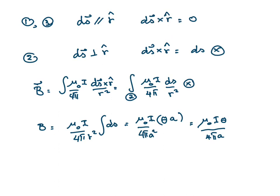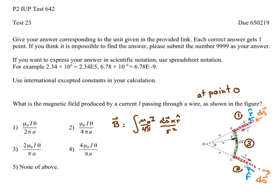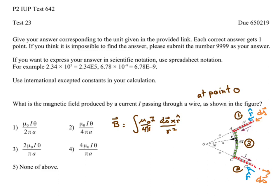So in parts one and two of the wire, ds cross r-hat is zero. This means the integral from the Biot-Savart law along these parts will be zero. We don't have to calculate the magnetic field contribution from the current in parts one and two because it's zero.